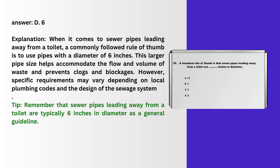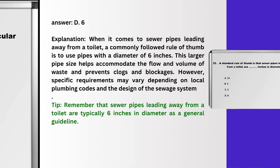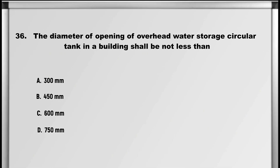Explanation: When it comes to sewer pipes leading away from a toilet, a commonly followed rule of thumb is to use pipes with a diameter of 6 inches. This larger pipe size helps accommodate the flow and volume of waste and prevents clogs and blockages. However, specific requirements may vary depending on local plumbing codes and the design of the sewage system. Tip: sewer pipes leading away from a toilet are typically 6 inches in diameter as a general guideline.